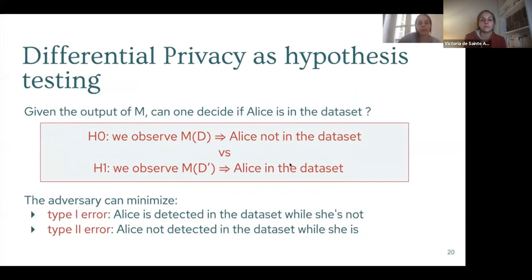From the point of view of an adversary, you want to minimize your error. The type one error is a false detection of Alice in the dataset, and the type two error is a missed detection of Alice.